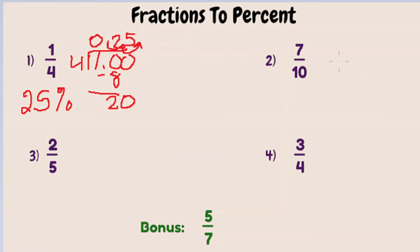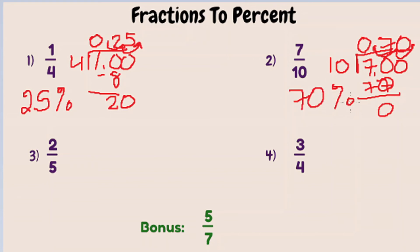Second example, same situation. Seven-tenths converted to a decimal would be ten into seven. Ten does not go into seven, we put our decimal here. Ten goes into seventy seven times. So 0.70 is our decimal. We move the decimal to the right one, two, and add a percent sign. Seven-tenths is equal to 70 percent.